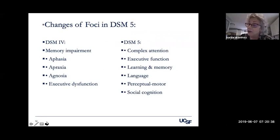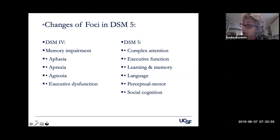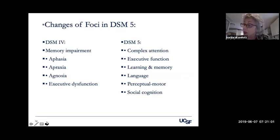DSM-4, the previous manual, emphasized memory, aphasia, apraxia, and agnosia as being common across all major disorders — which I always found mystifying because those were the least obvious deficits most often. DSM-5 puts forth a more interactional view, with complex attention, executive dysfunction, and social cognition and learning being essential along with other commonly understood deficits.